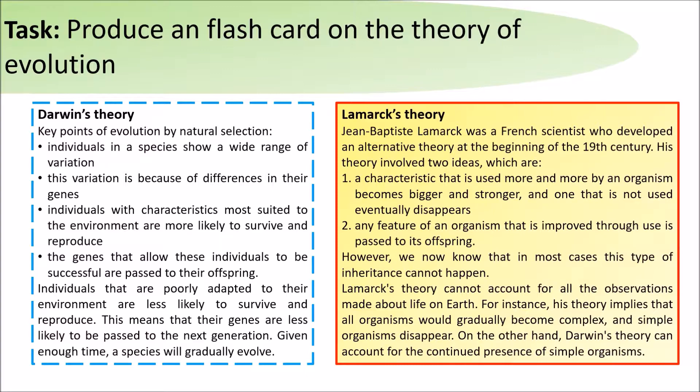The first idea is that a characteristic used more and more by an organism becomes bigger and stronger, and one that is not used eventually disappears. Secondly, any feature of an organism that is improved through its use is passed on to its offspring.